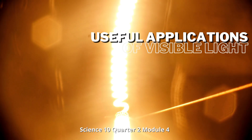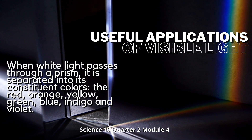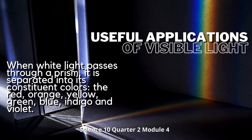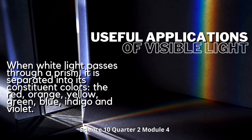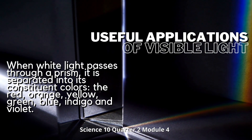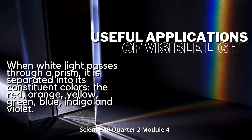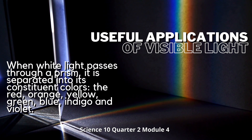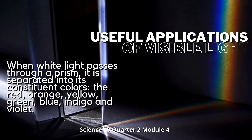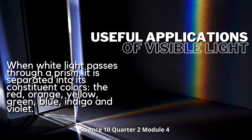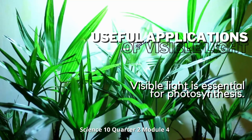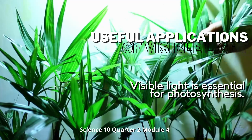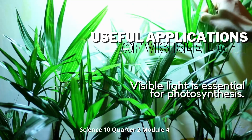These are the useful applications of visible light. When light passes through a prism, it is separated into its constituent colors: red, orange, yellow, green, blue, indigo, and violet. These colors continuously change from red to violet. Red color has the longest wavelength among these colors and violet has the shortest. Our eyes are sensitive to electromagnetic waves of wavelengths ranging from 4 x 10⁻⁷ meters to 7 x 10⁻⁷ meters, which is the range of wavelengths of white light, called the visible spectrum. Visible light is essential for photosynthesis, the process by which green plants make food.